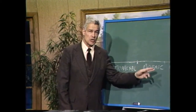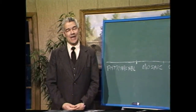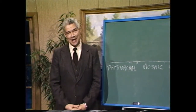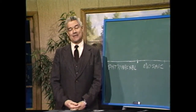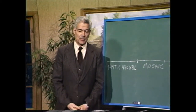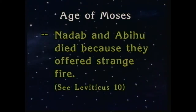When the Mosaic priesthood began, Aaron was, of course, the high priest, and he had four sons. We read in the 10th chapter of the book of Leviticus that the two oldest boys died because they offered strange fire before the Lord, which the Lord had commanded them not. Their names were Nadab and Abihu. Again, we assume God must be technical because he killed these boys for offering strange fire before the Lord.